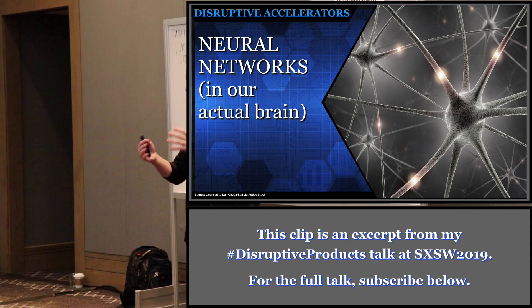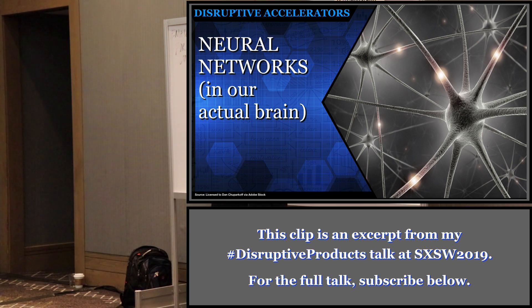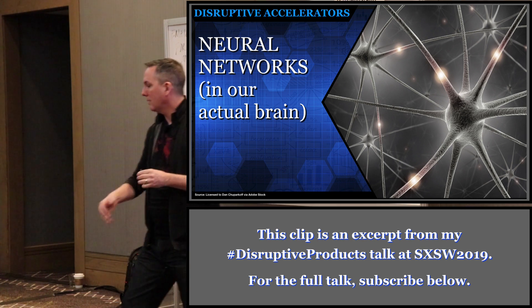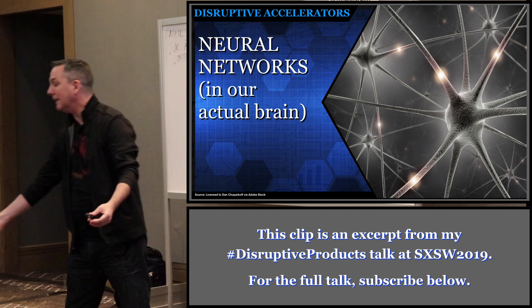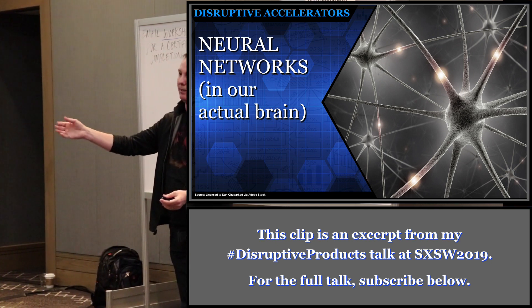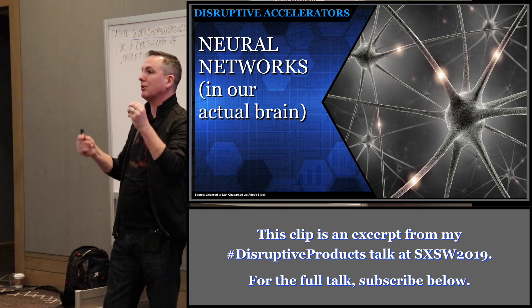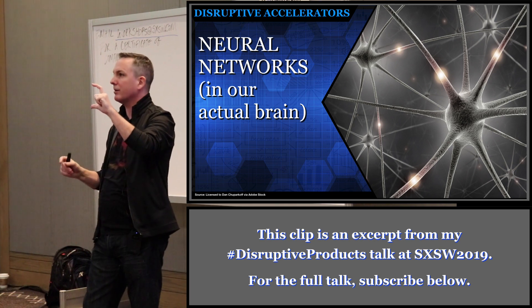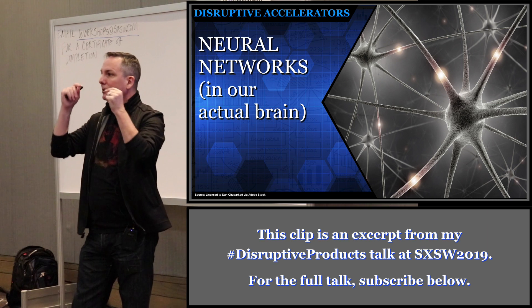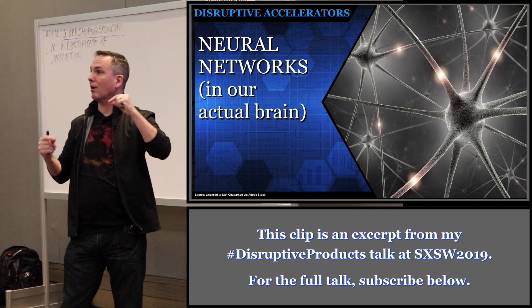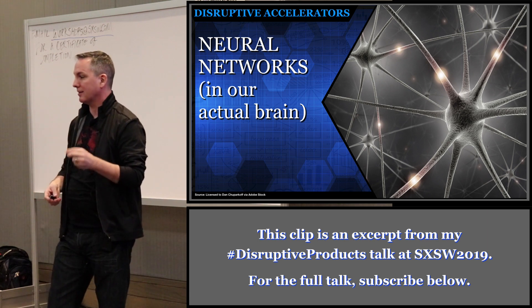Neural networks are called that because they mimic something really happening in our brain. When I say 'what is this?' you answer instantly. It could be a pack of cigarettes or other things shaped like that, but your brain instantly fires neurons and says it's the right shape for a card deck, it looks like something I've seen before. One neuron at a time, it figures out the answers to those questions in milliseconds. That's pretty cool.